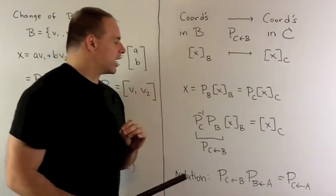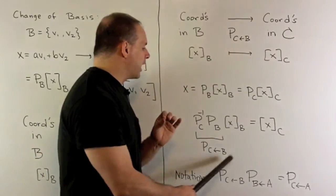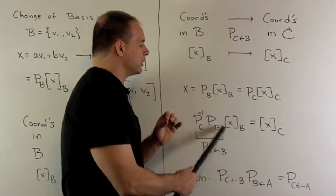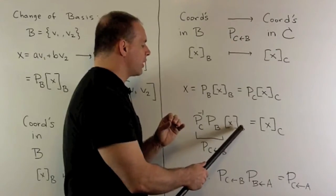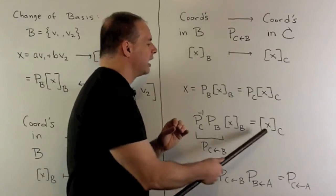Now, the notation is nice. If we apply our change of basis matrix to coordinates in B, this reads off the B, sends it to C like we would want.